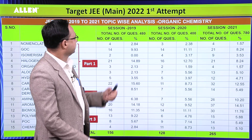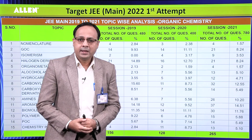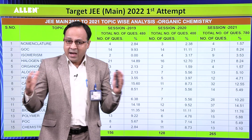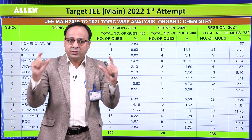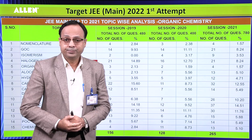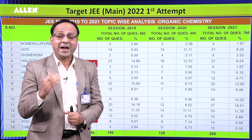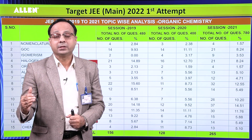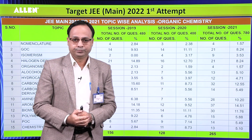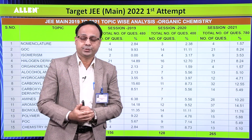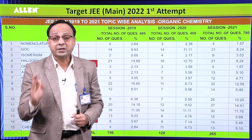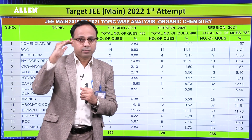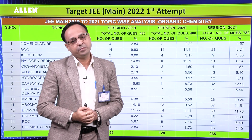Let us analyze IIT JEE Mains paper of the last three years. Yahan par hum organic chemistry ko teen parts mein define karte hain. Part 1 includes GOC, isomerism, hydrocarbons of Class 11, alkyl halide, and alcohol and ether of Class 12. These are concept-based topics. 30 to 35 percent questions are coming from this part — easy to medium level questions.